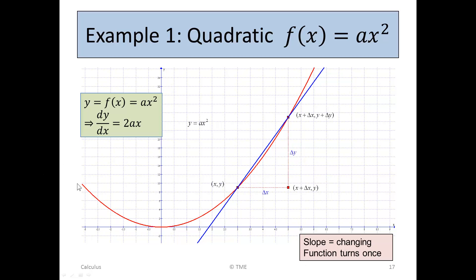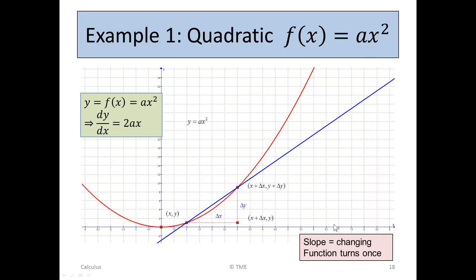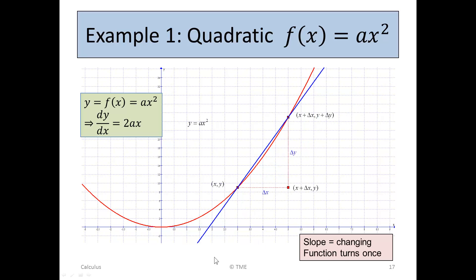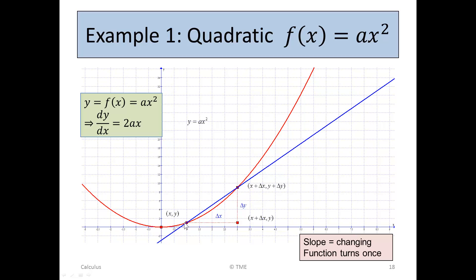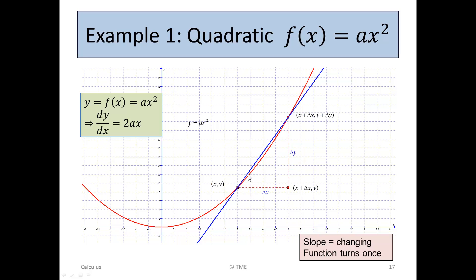The function turns once — it comes from a height, goes down, turns, and then continues and doesn't return again. So a quadratic function turns once. We can use either the point (x, y) or (x plus delta x, y plus delta y) as a starting point and get a different slope. The slope between the two points on the curve changes depending on where on the curve you are.